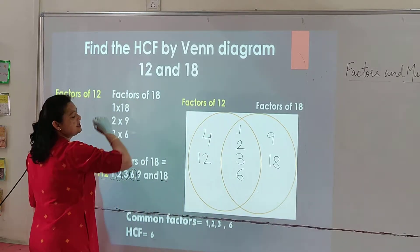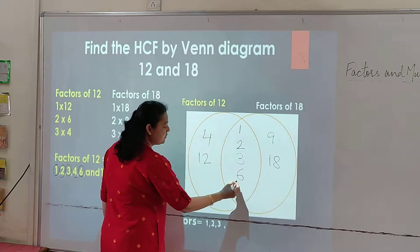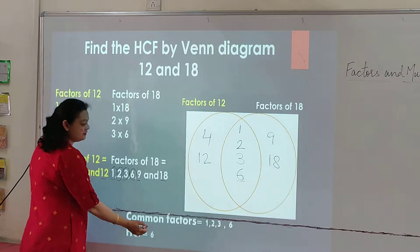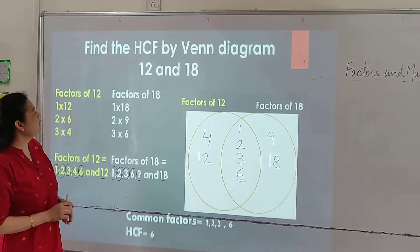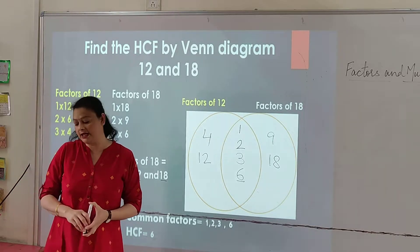And we know that HCF is the highest common factor. Out of these, the highest one is 6. So as a result, HCF is 6 in this Venn diagram. This will show you how to find out the HCF by the help of Venn diagram.